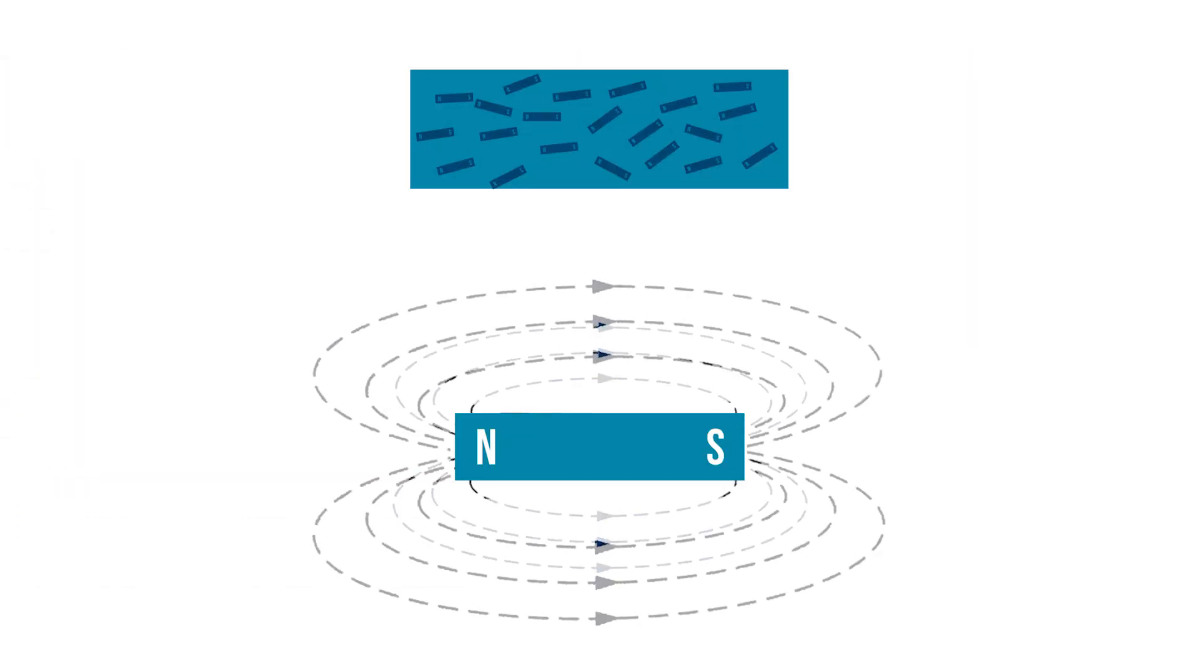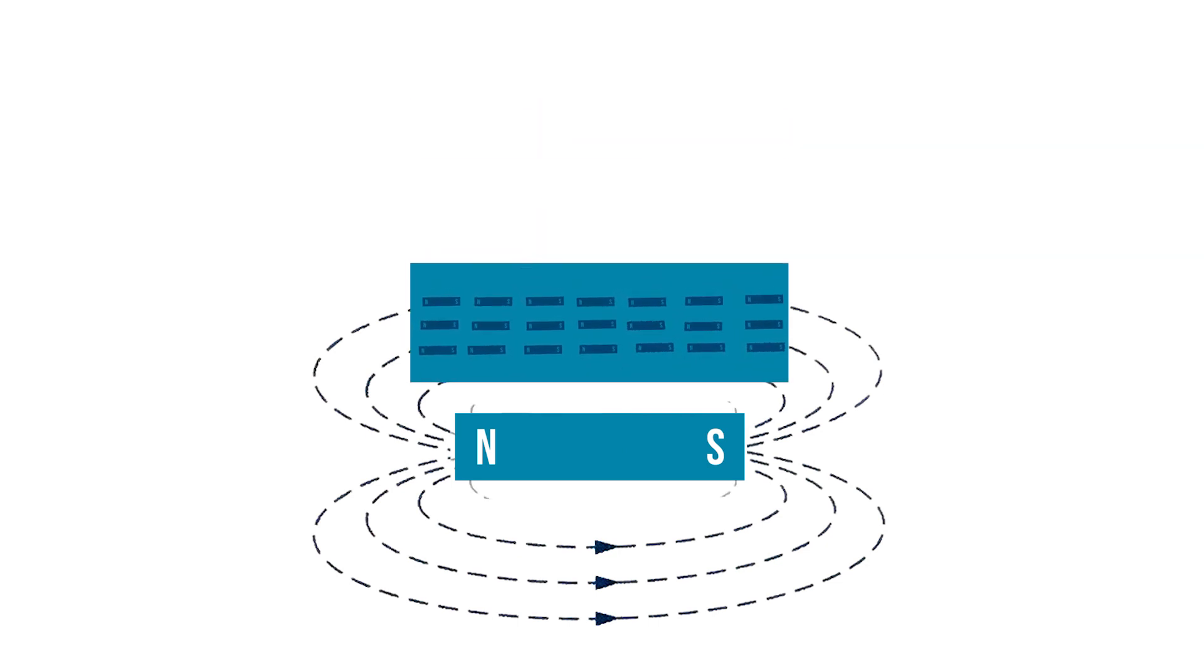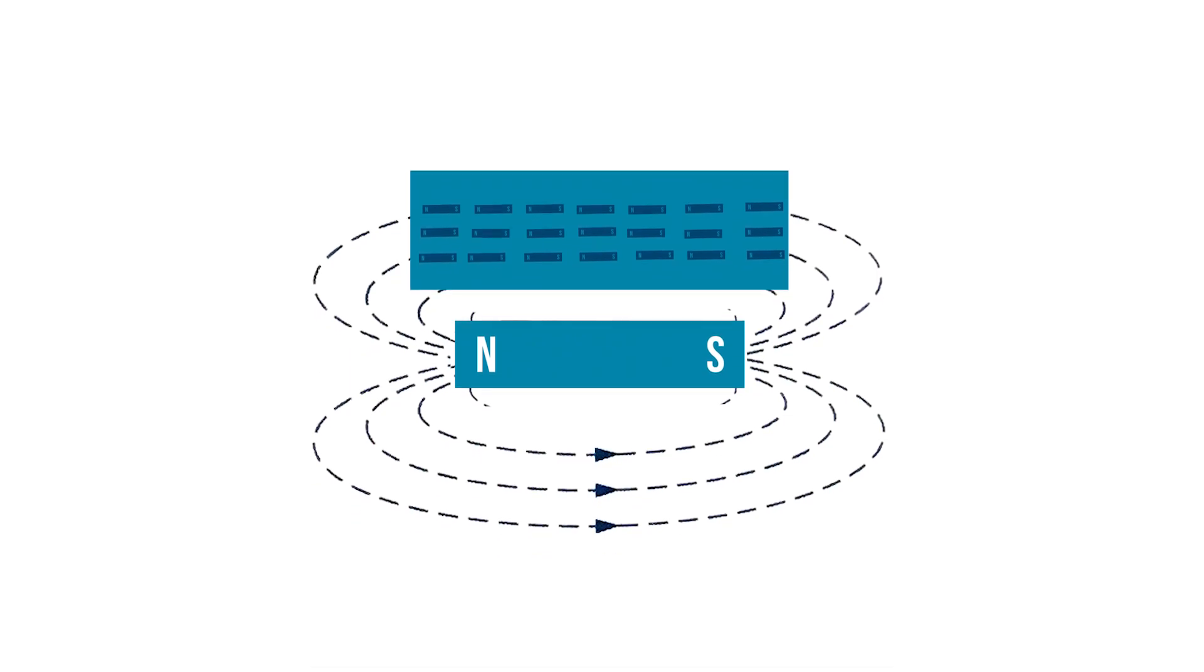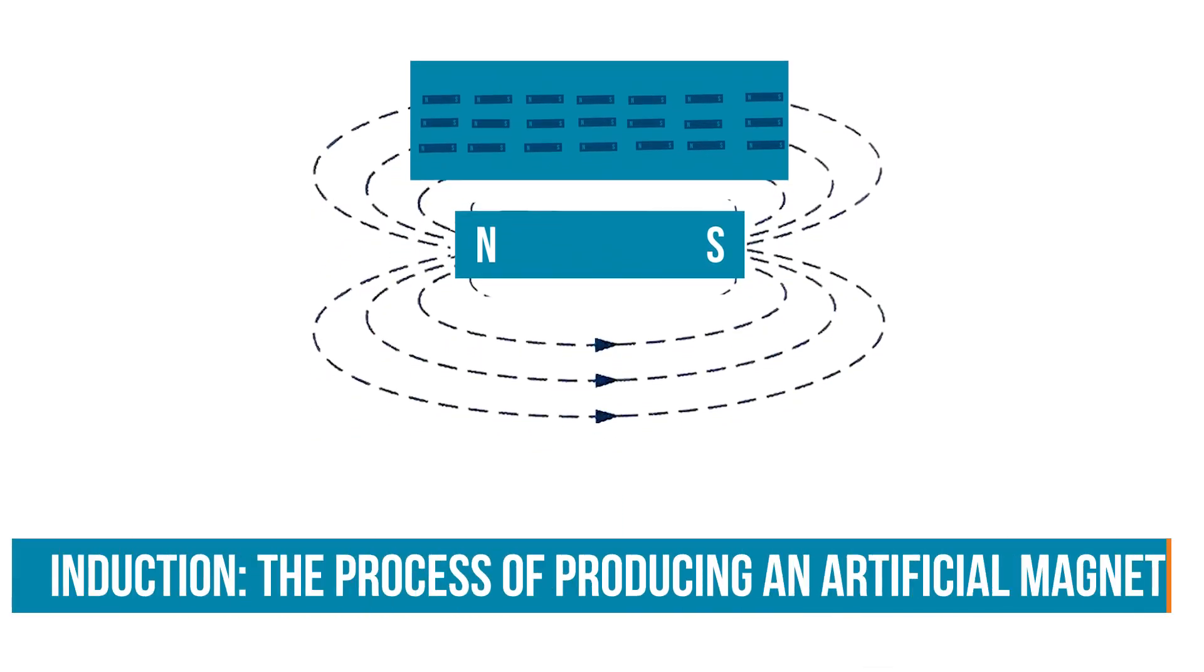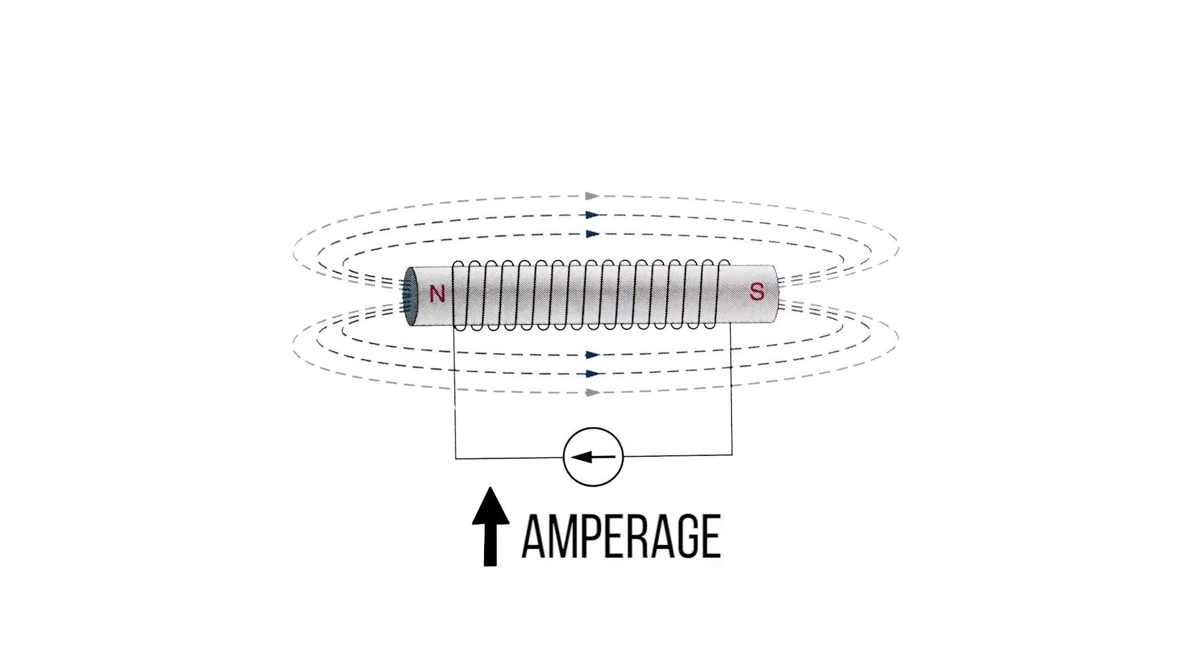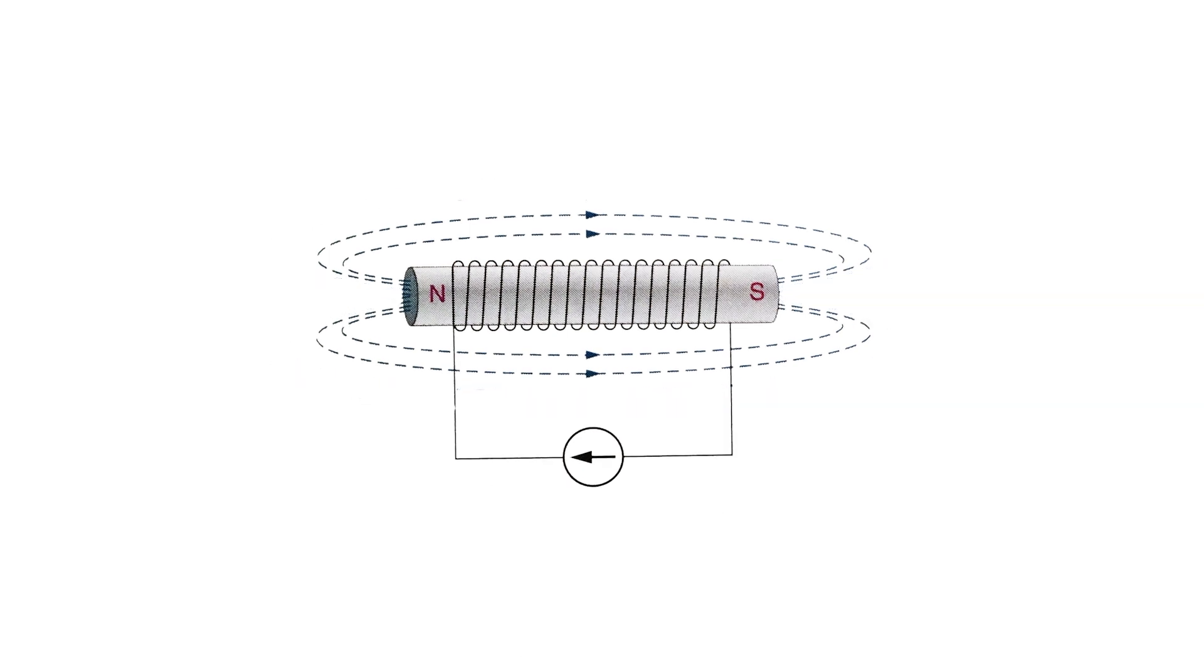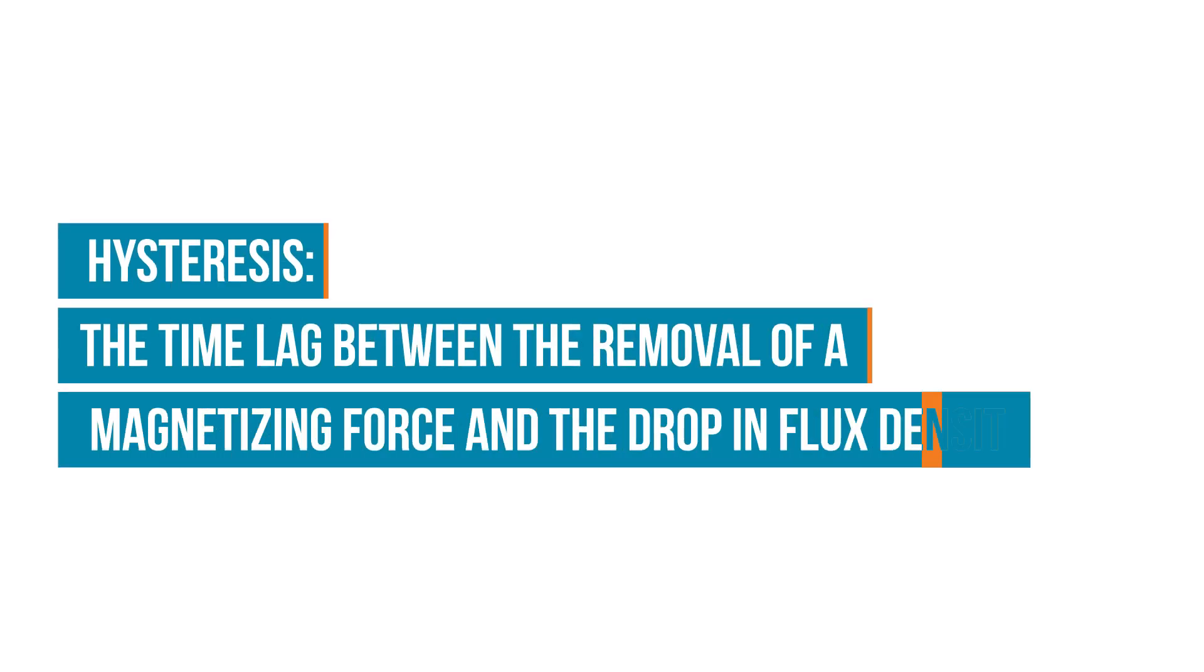We know that if a ferromagnetic material is placed in a magnetic field, its atoms will align and it will become temporarily magnetized. If an iron bar is used for the core, the lines of flux are concentrated in the bar and it becomes magnetic through induction. The coil-wrapped iron bar now acts as an electromagnet. As long as current flows through the coil around the bar, it stays magnetized. But once current stops flowing, the bar will lose its magnetization. The time lag between the removal of a magnetizing force and the drop in flux density is known as hysteresis.